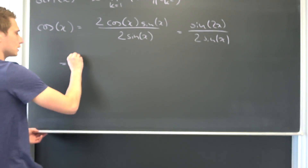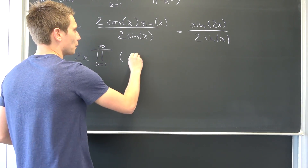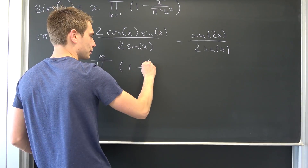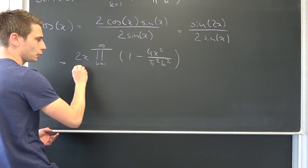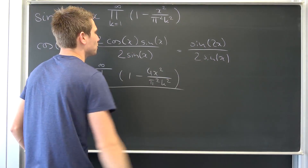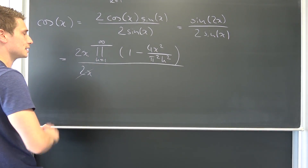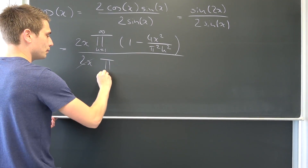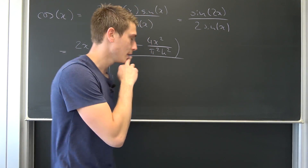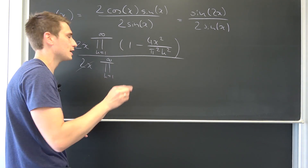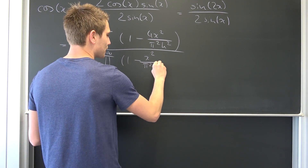So at first we are going to have 2 times x, then the infinite product from 1 to infinity of 1 minus — since we have 2x squared that's 4 times x squared over pi squared times k squared. This whole thing is over 2 times sine of x, which is 2 times that same chunk, and you can see already something is going to cancel out. Then we end up with the infinite product of 1 minus x squared over pi squared k squared.